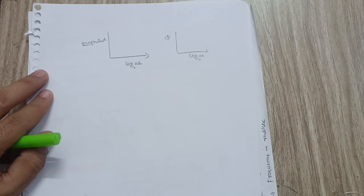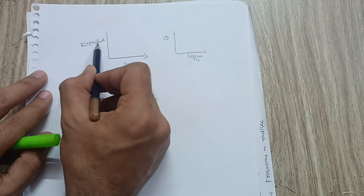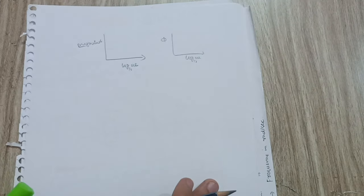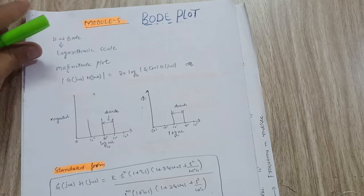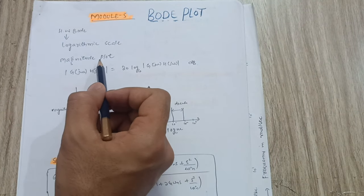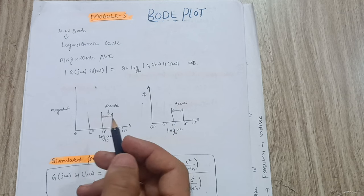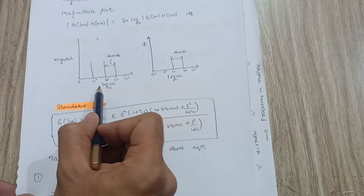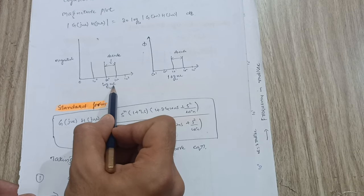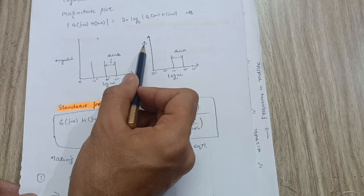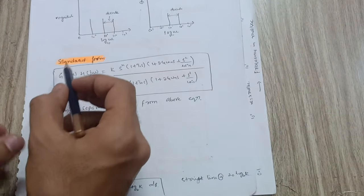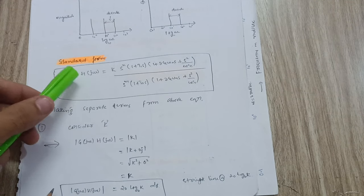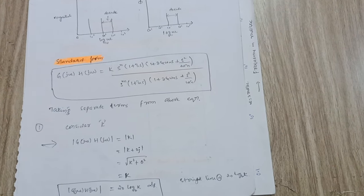The basic definition of the Bode plot is to draw the relationship between magnitude and phase angle with respect to log of omega. We have the magnitude plot and the phase plot. This is the decade on the log scale — log base 10 of omega versus magnitude and phase angle. Whenever a problem is given, you have to focus on the standard form, as discussed before in root locus.